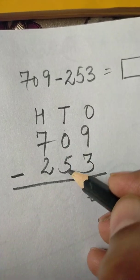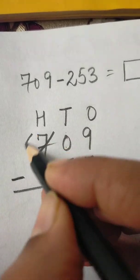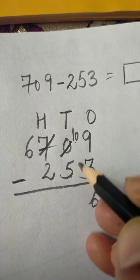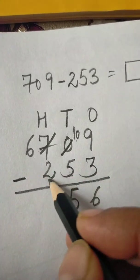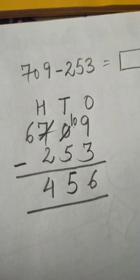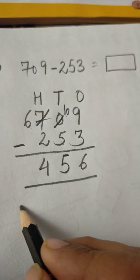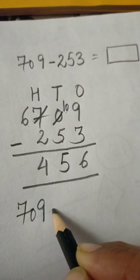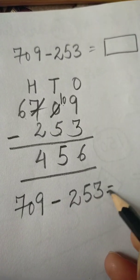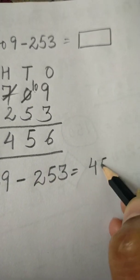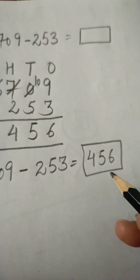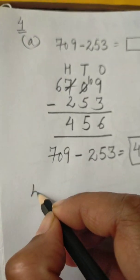0 minus 5 is not possible, so we take one borrow from here. 10 minus 5 is 5, 6 minus 2 is 4 — so we got 456. 709 minus 253 gives 456.